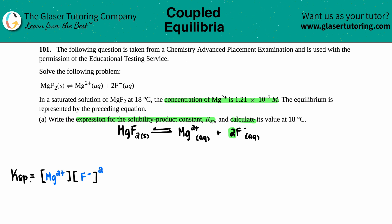So this is the Ksp expression. Now we just have to calculate the value. It said that the concentration of Mg2+ is 1.21 times 10 to the negative third molarity. So I know that this number is 1.21 times 10 to the negative third molarity. Now they did say that we were in a saturated solution, which means that I can use my ratios.